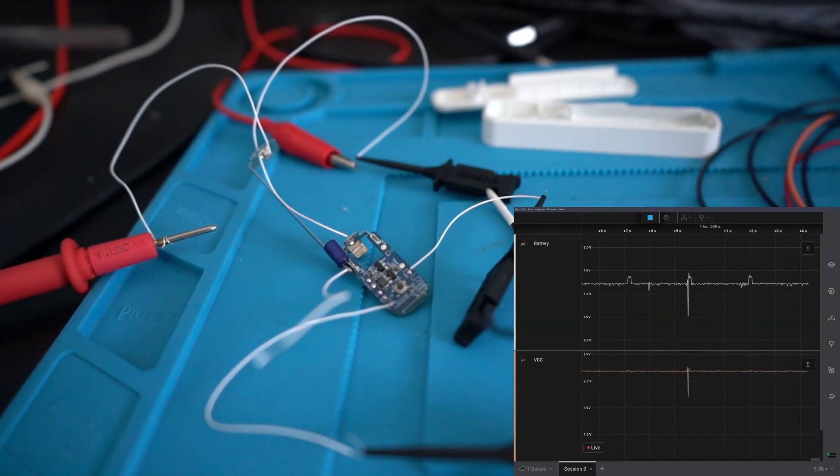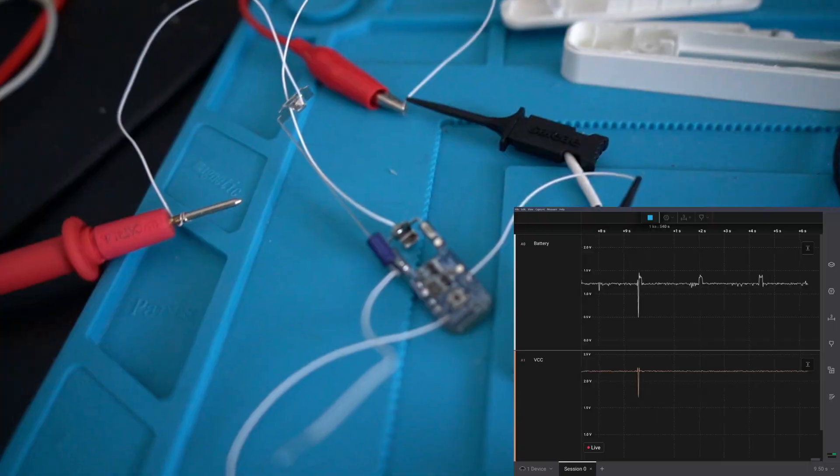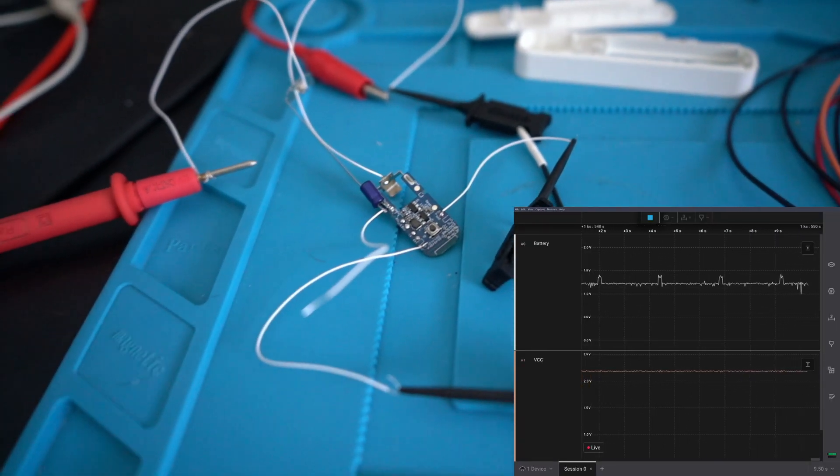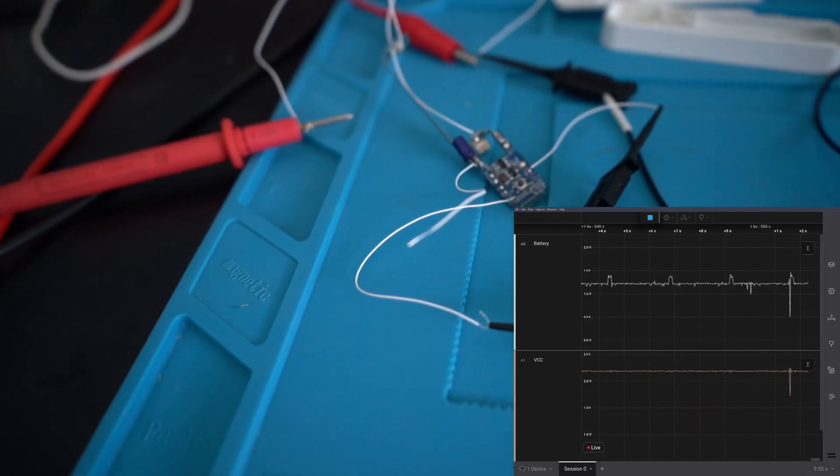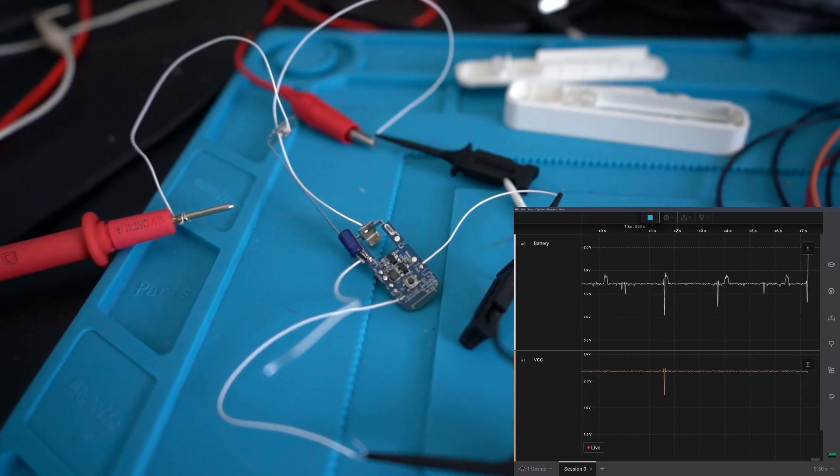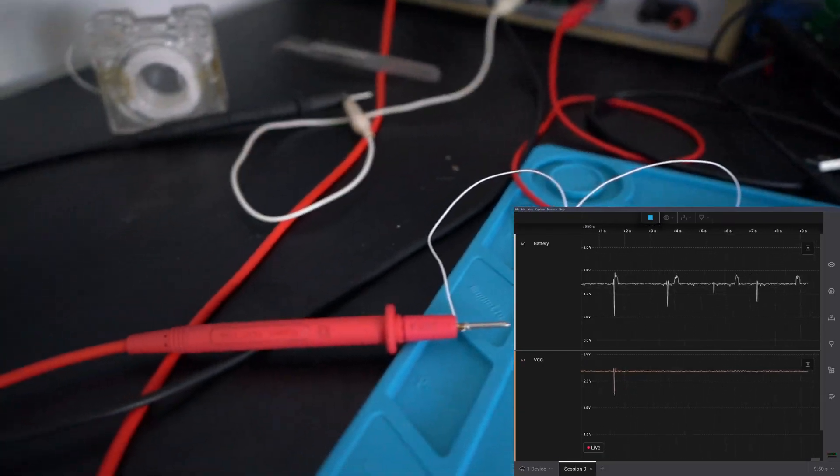As you can see here, I've made a change. I've got an extra capacitor I've soldered onto the board there. It's currently out of circuit - you can see this fly lead hanging off the end. It's not connected on both sides, it's as if it's not in there at the moment.